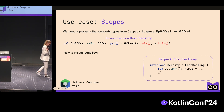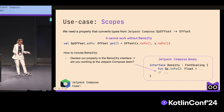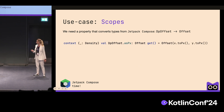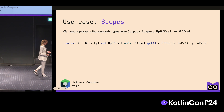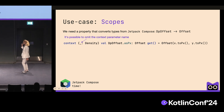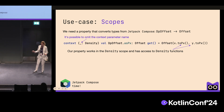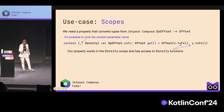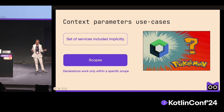To use the toPx function, we need to include Density in our property. We could place our property in the Density interface, but we are not Jetpack Compose library developers, so we can't change the library source code. The best practice option is to use context parameters. We add a context parameter, using an underscore, which means Density exists implicitly in the caller's scope. You can use an underscore when you don't want to set a context parameter name. Now the toPx function is resolved because our property works in the Density scope and has access to its functions. Scopes are another key use case: if you're working within a specific scope and want your declaration to require that scope, use context parameters.